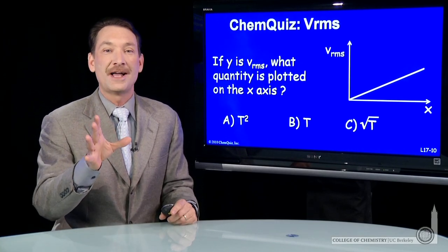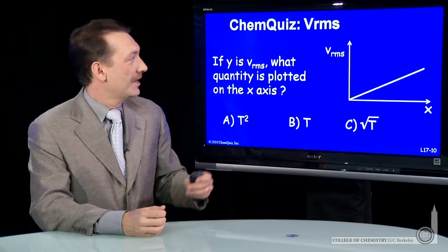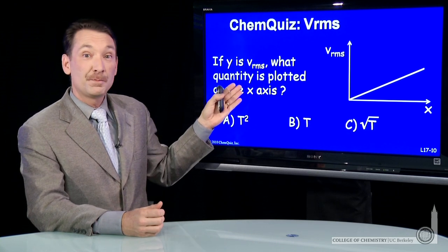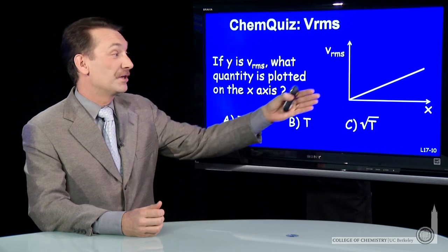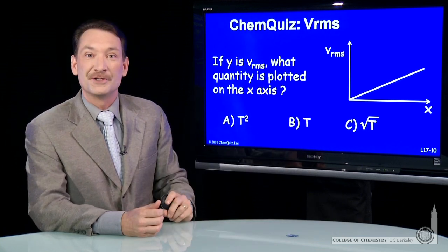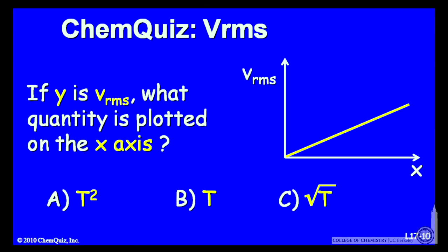Let's look at that root mean squared velocity and the relationship with temperature. If I plot the root mean squared velocity on the y-axis, which plot on the x-axis would give me a linear relationship? The temperature squared, the temperature, or the square root of the temperature? Think about that for a minute and make a selection.